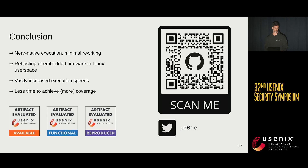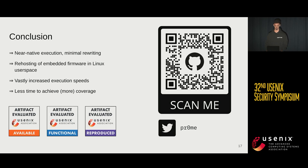With that, I conclude my presentation. We are introducing near-native execution with minimal rewriting to re-host embedded firmware in Linux user space, which allows us to vastly increase execution speeds and fuzz faster to achieve more coverage — or at least on-par coverage in way less time. With this QR code, you can find our GitHub, the source code of our framework, the experiment data, and we also got our artifact evaluated. Thank you.